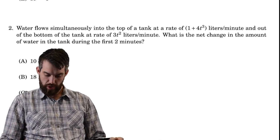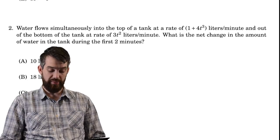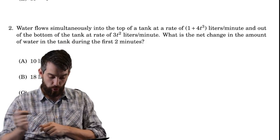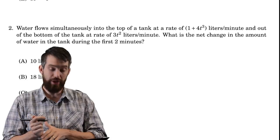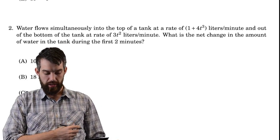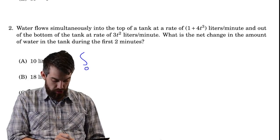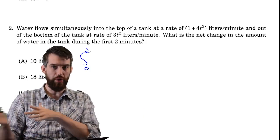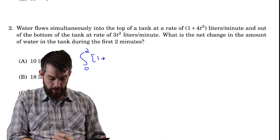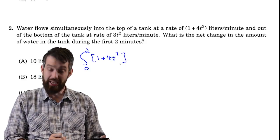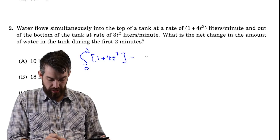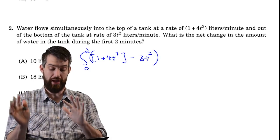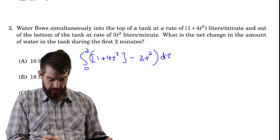Next problem is a net change problem. Water flows into a tank at rate 1 plus 4t cubed, and out at rate 3t squared, both in liters per minute. The question asks for the net change during the first two minutes. I set up a definite integral from 0 to 2, combining inflow minus outflow: the integral of (1 + 4t³ − 3t²) dt.